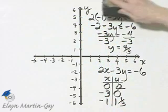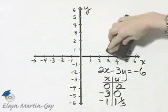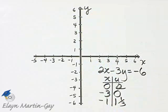Now let's plot those three ordered pair solutions, see if they all lie on the same line, and let's graph our equation.